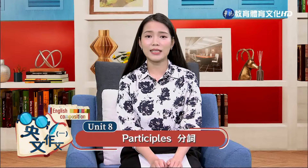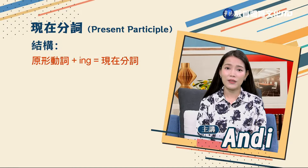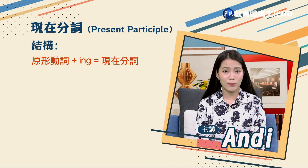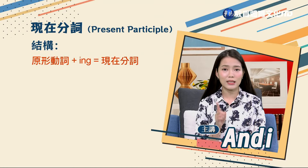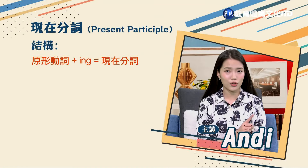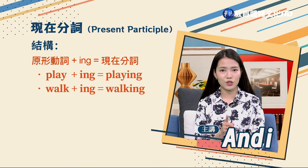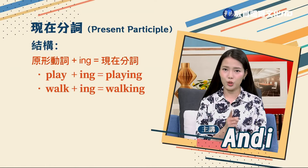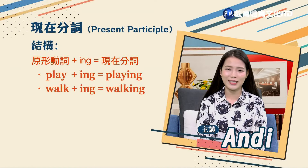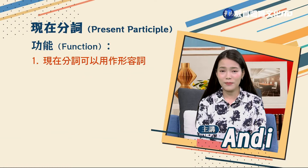首先我們先來了解一下它的結構。現在分詞就是以-ing結尾，所以它的結構就是原形動詞加上-ing。比方說原形動詞play加-ing，playing就是現在分詞；walk加-ing，walking就是現在分詞。那現在分詞有什麼功能呢？